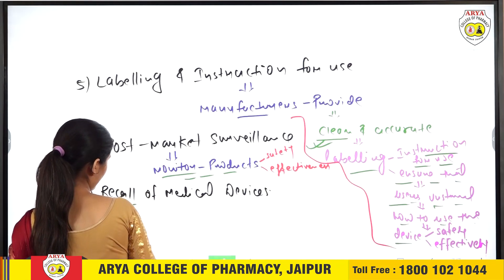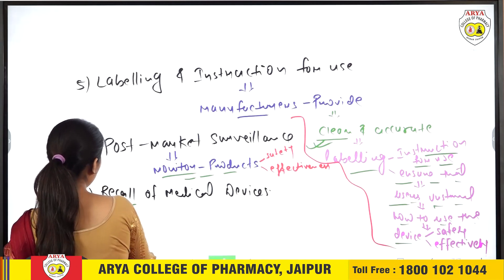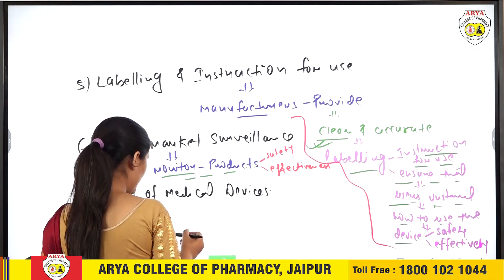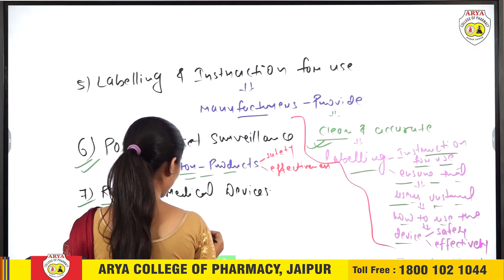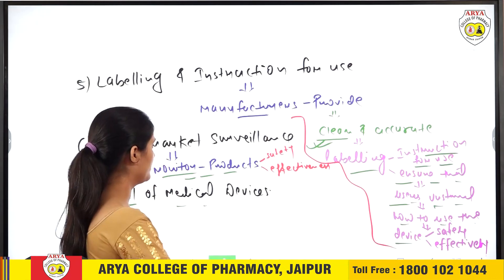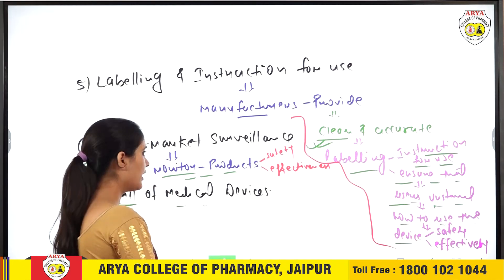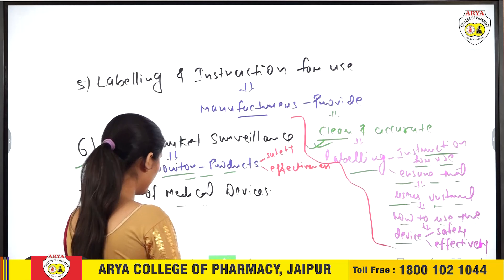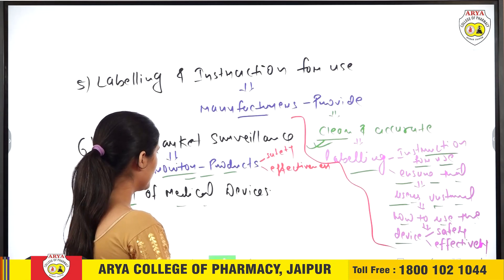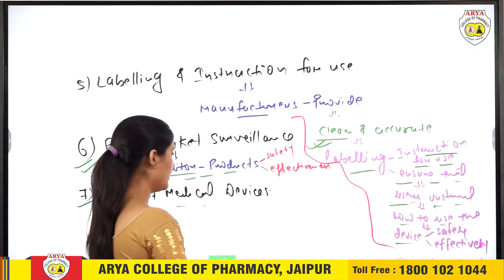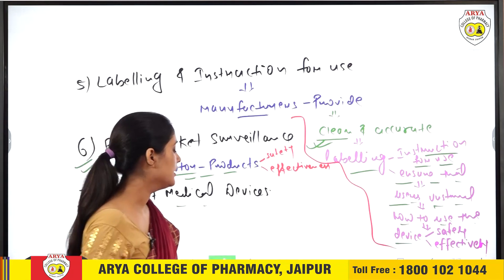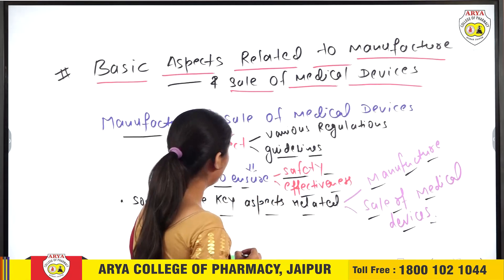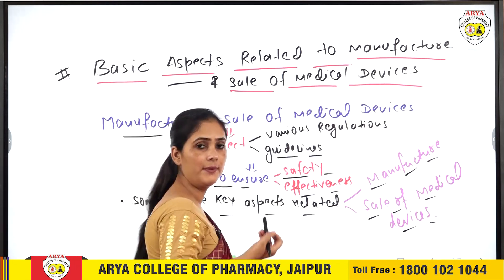The last aspect is Recall of Medical Devices. If a manufacturer or authorized agent finds that a device is causing harm to any patient or user, then that device is recalled — it is banned, stopped, and removed from the market. These are the basic aspects related to manufacturers and sale of medical devices.